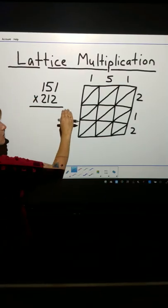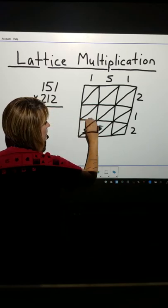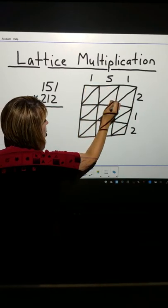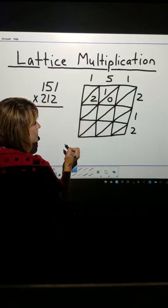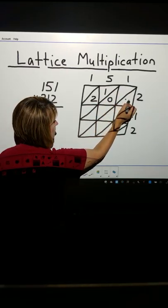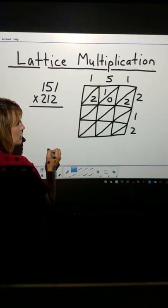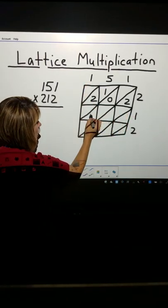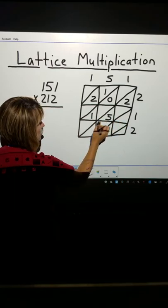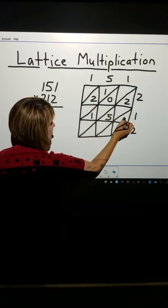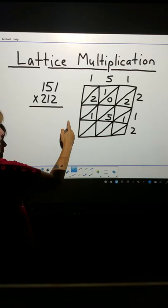I'm going to do each number, and I'm going to call these layers. So, 1 times 2 is 2. 5 times 2 is 10. Place it this way. 1 times 2 is 2. Top layer done. 1 times 1 is 1. 5 times 1 will be 5. 1 times 1 is 1. Middle layer done.